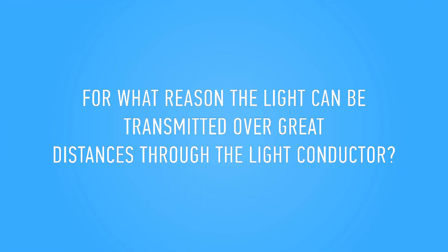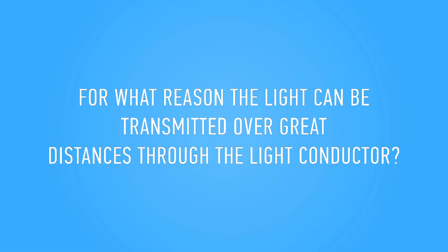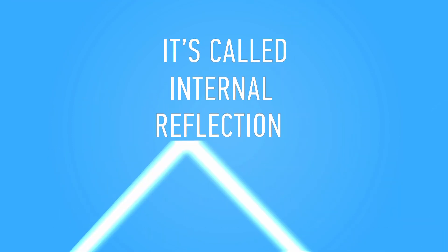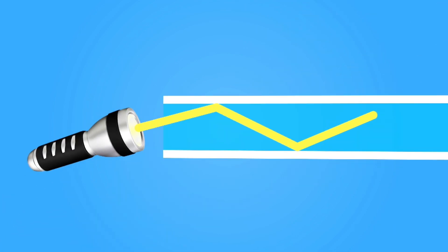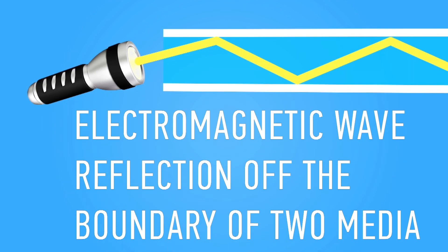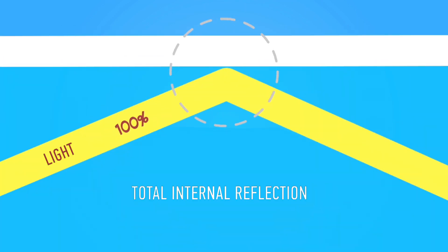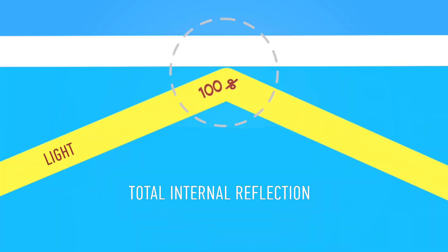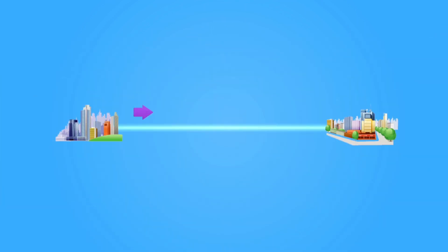How can light be transmitted over great distances through a light conductor? This happens thanks to a process called total internal reflection. If we shine light on a glass cylinder at a certain angle, the light reflects off the side walls. In total internal reflection, electromagnetic waves reflect off the boundary of two media — the light almost doesn't fade out, meaning it can be transmitted over very long distances for all communication needs.